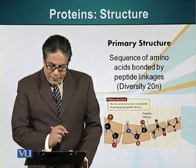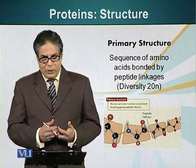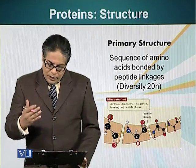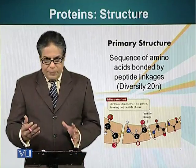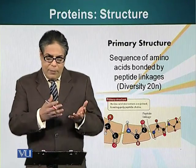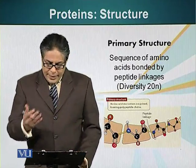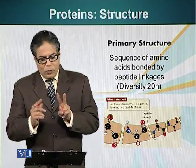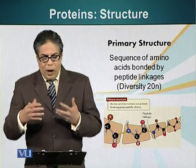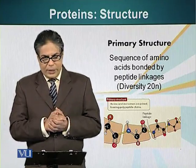The primary structure, as I mentioned, is basically the result of these peptide bonds — the sequence of different amino acids in a protein molecule. The diversity of different combinations we can form by linking amino acids is very great. We can take a simple example: if we want to link two amino acids together, we can have 400 different combinations.